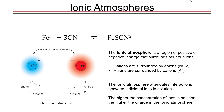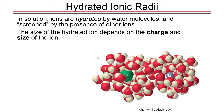Any cation or anion dissolved in an aqueous solution will develop an ionic atmosphere. An ionic atmosphere is a collection of ions of opposite charge that are held at a distance around a cation or anion suspended in aqueous solution. The reason the ions are held at a distance is because of what's known as a hydration sphere.